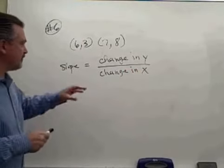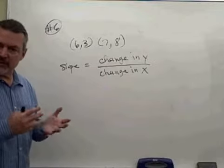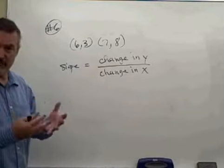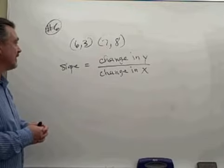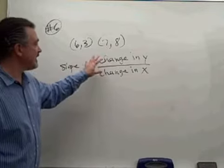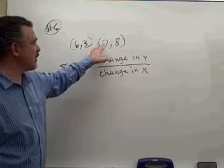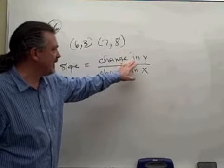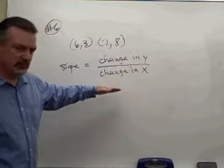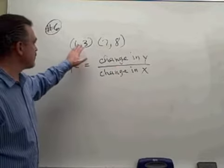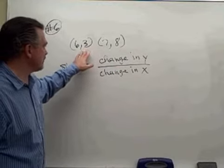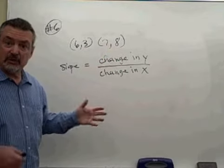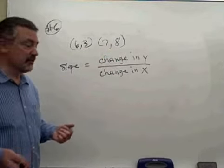You figure that change between any two points that are on the line. We have these two points that are said to be on our line in question. So if we simply calculate what the change was going from this point to this point — what was the change in Y, put that in the numerator of a fraction, determine what the change in X was, put that in the denominator of the fraction, reduce the fraction, and we have our slope.